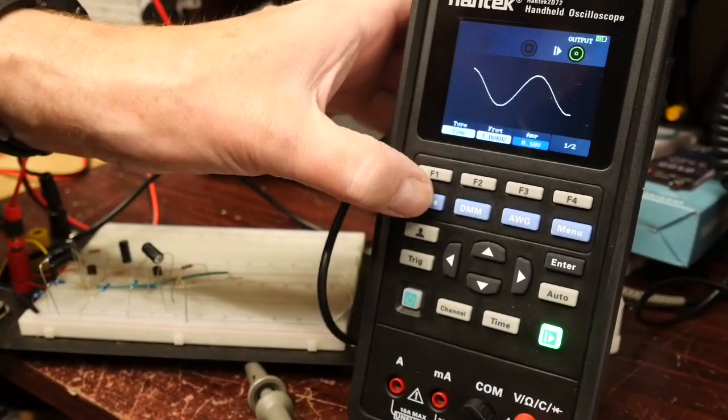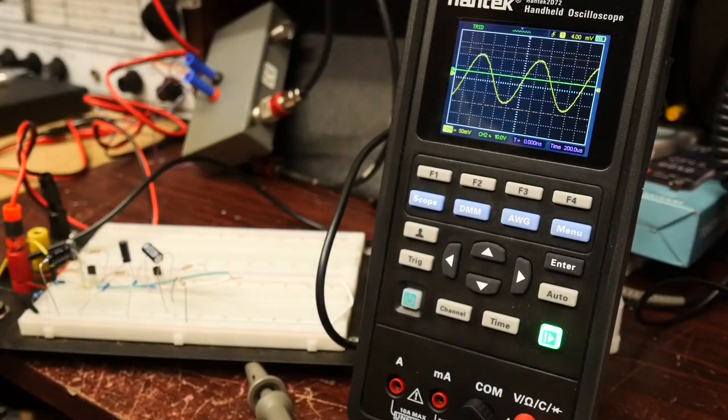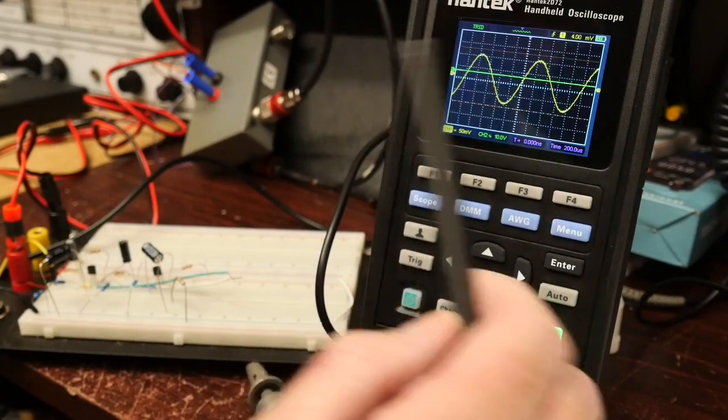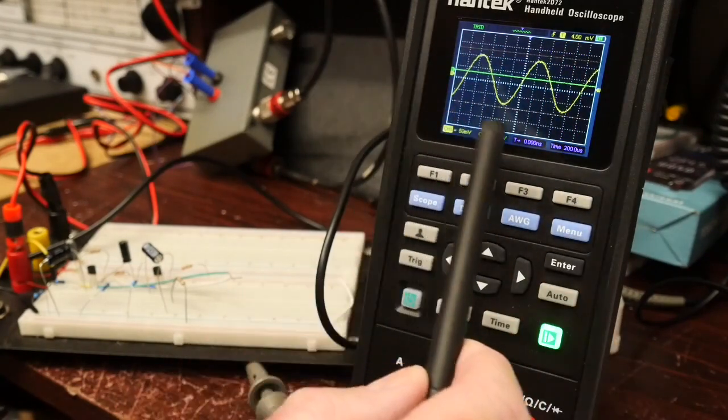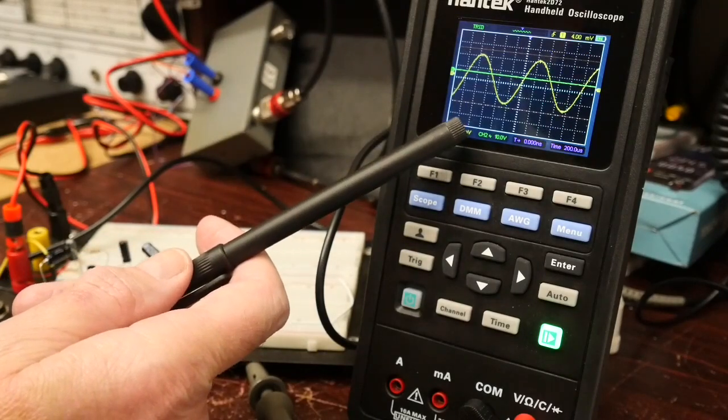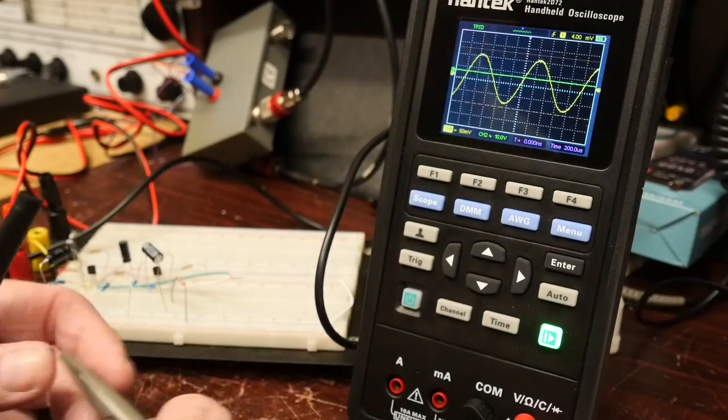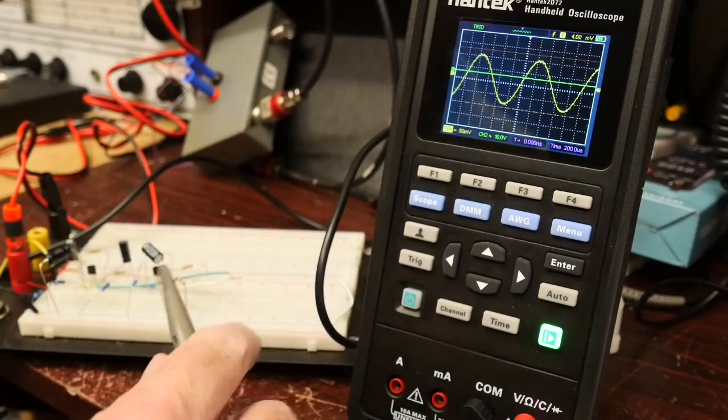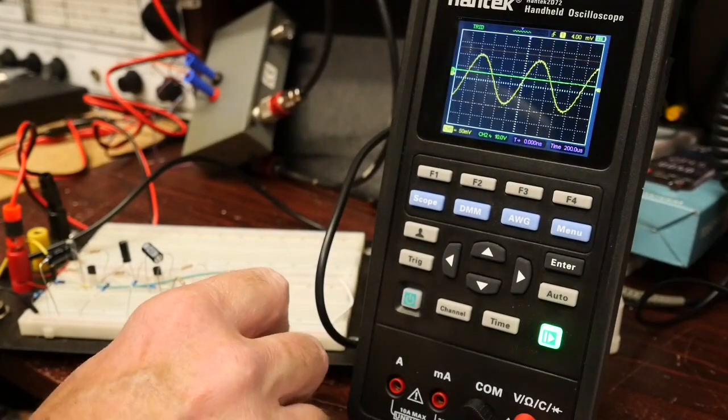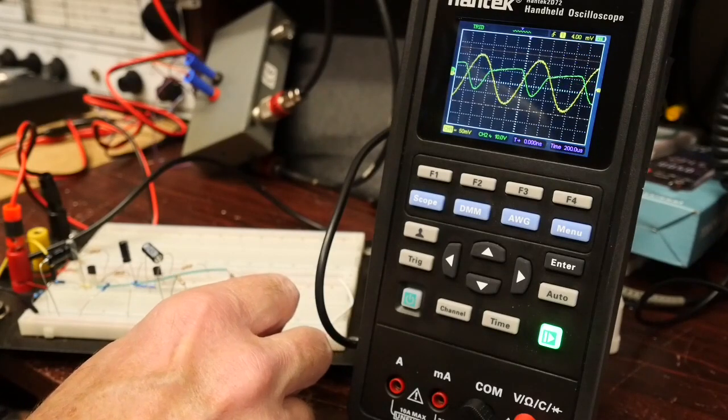So we now go to scope mode. I've got channel one of the scope hooked up to the input, so we should be able to see that wave. And as you can see, nice sine wave in the yellow trace. Currently got nothing connected to channel two, which is the green trace. So we've got a sine wave there, and the thing to note is it's 50 millivolts per division, so that's a reasonably sensitive setting.